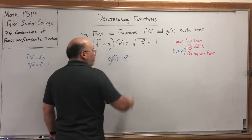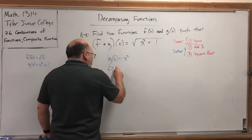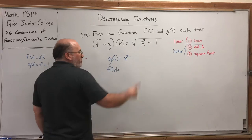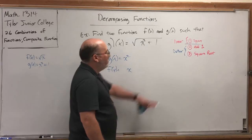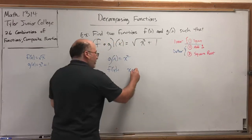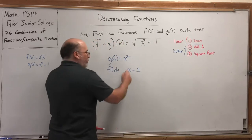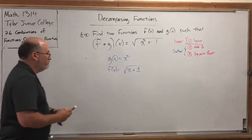So, g of x equals x squared. And what would the outer function be? The function that takes something, adds 1 to it, and then square roots. Would that work?